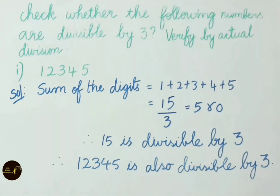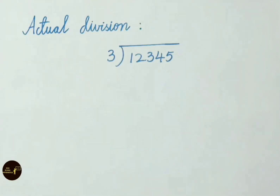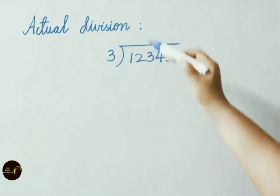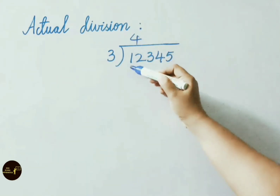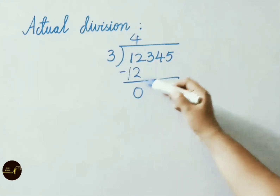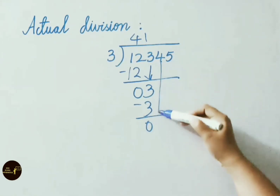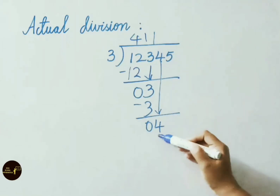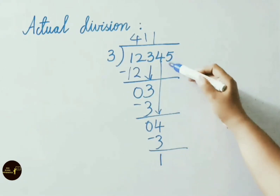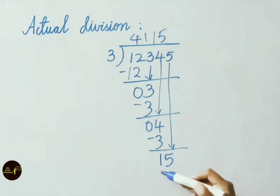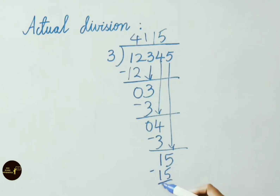Now let us verify this by doing the actual division. 12,345 divided by 3: 3 fours are 12, so 12 minus 12 is 0. Get down 3; 3 ones are 3, so 3 minus 3 is 0. Write down 4; 3 ones are 3, so 4 minus 3 is 1. Write down 5; 3 fives are 15, so 15 minus 15 is 0. Therefore the given number 12,345 is divisible by 3.